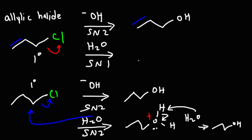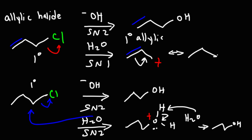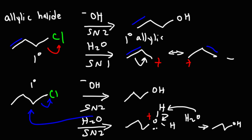The leaving group leaves, and we have a primary carbocation — but the key difference is it's primary and it's allylic. The carbocation is stabilized by resonance. So water can approach any one of these carbocation positions, but we're going to get the same product whether you put the OH on one side or the other.